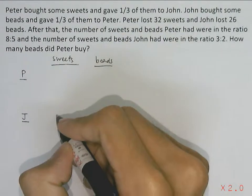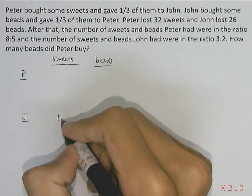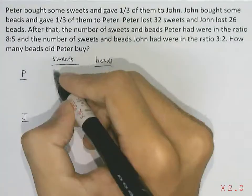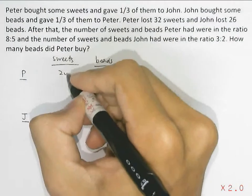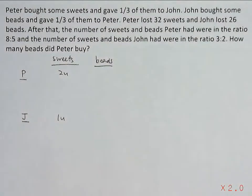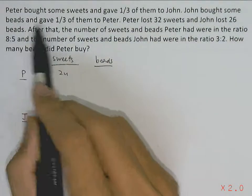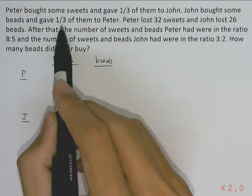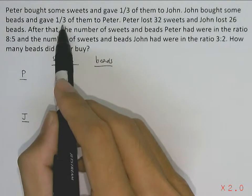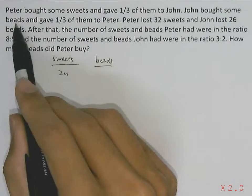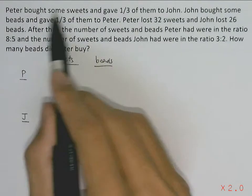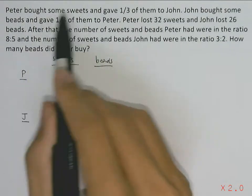John also bought beads and gave 1/3 of them to Peter. Since the number of beads and number of sweets both of them bought may not be the same, we treat them separately.